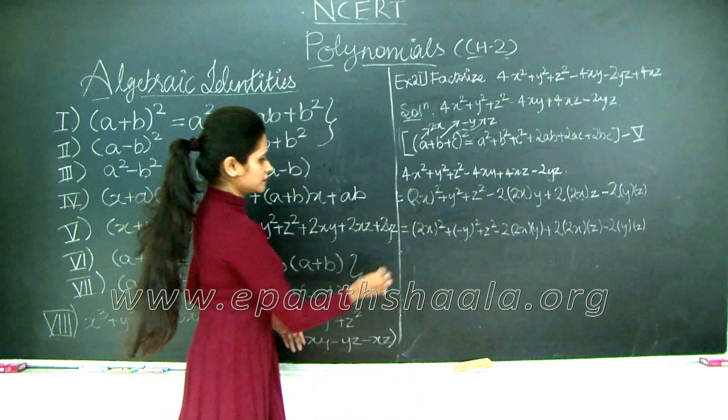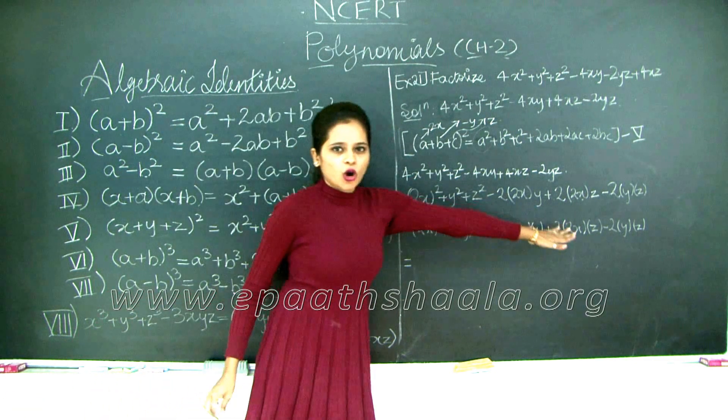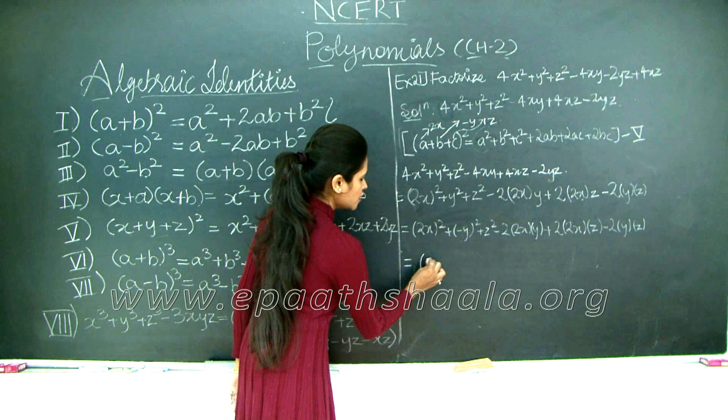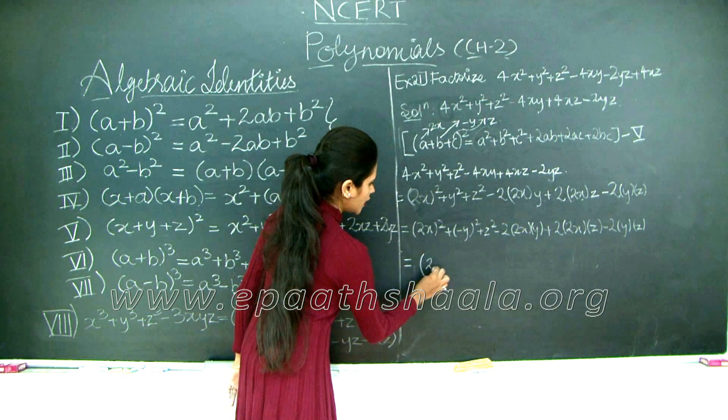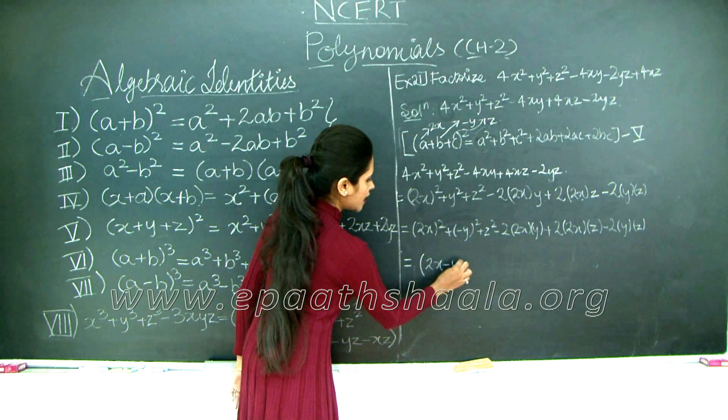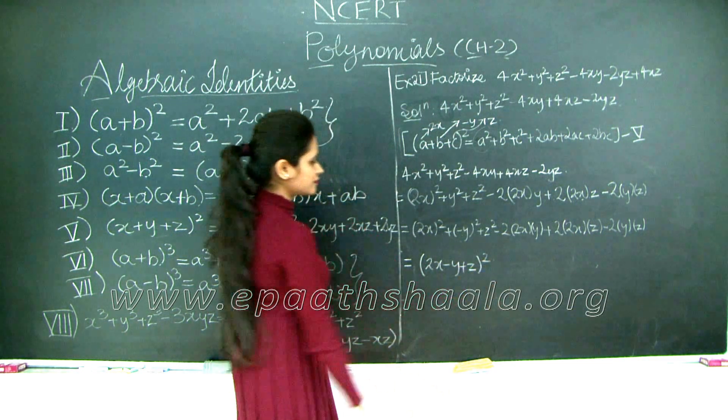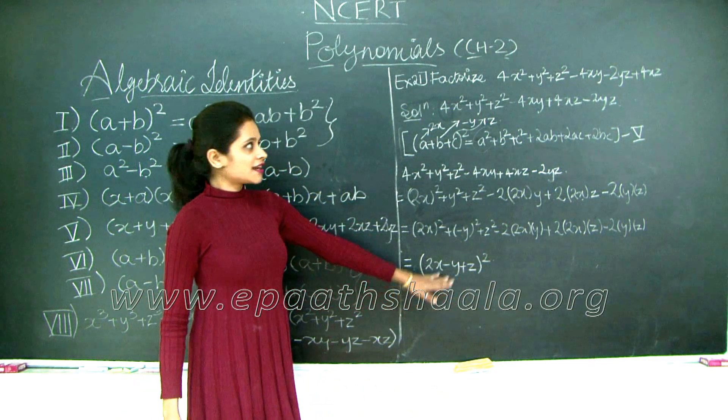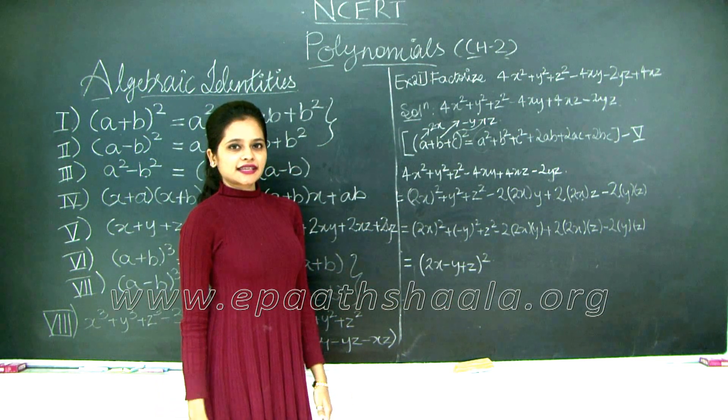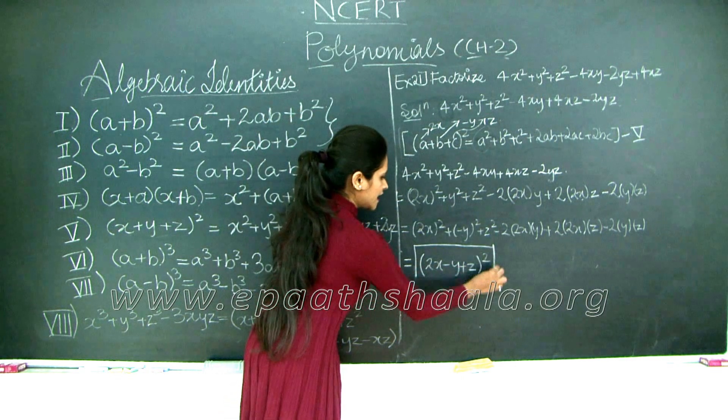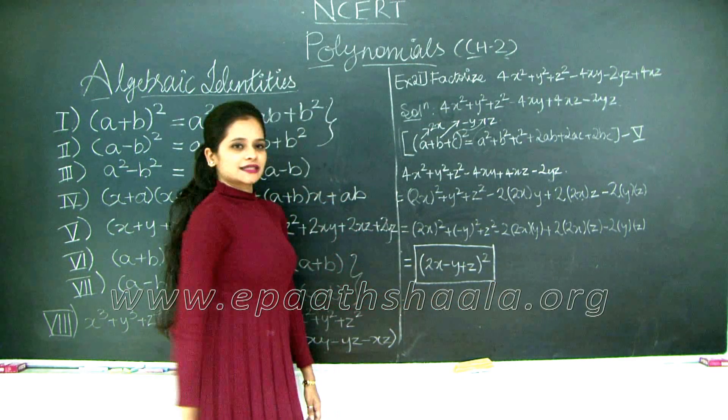Therefore, this entire expression, this entire long term, reduces just to 3 terms: (2x - y + z) whole square. Therefore, we have factorized our exercise number 21, the solved example 21. And finally, as tradition goes, we are going to box it up.